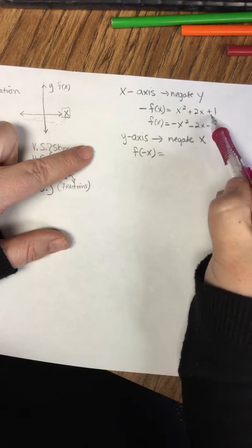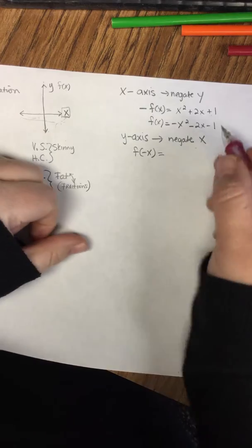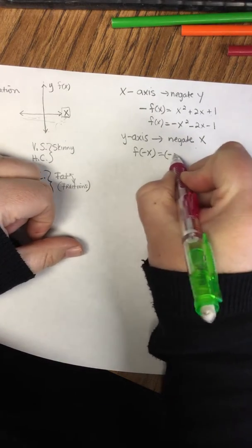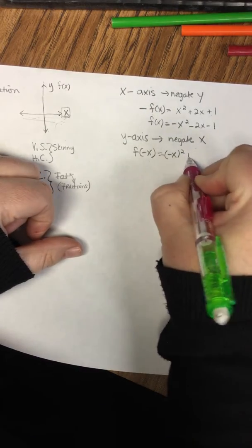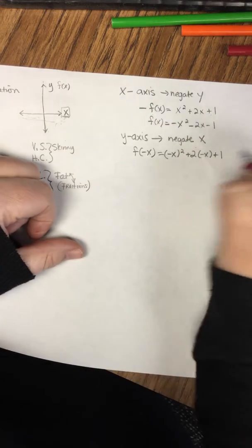Let's just use that same equation. So inside of the parentheses, I'm going to put (-x)² + 2(-x) + 1.